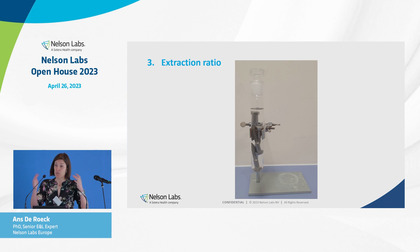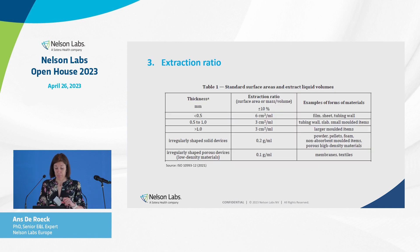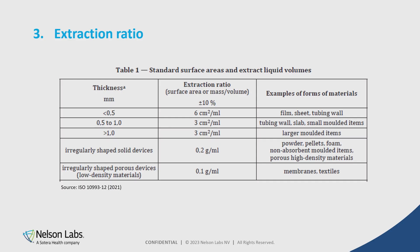Now we know which solvents to add — but how much? What is the extraction ratio? Part 18 doesn't say anything about this, so we often use Part 12. Depending on the thickness of the device, we often use 3 or 6 cm² per mL. When it's difficult to calculate the surface area, it's also possible to use a weight-based ratio.